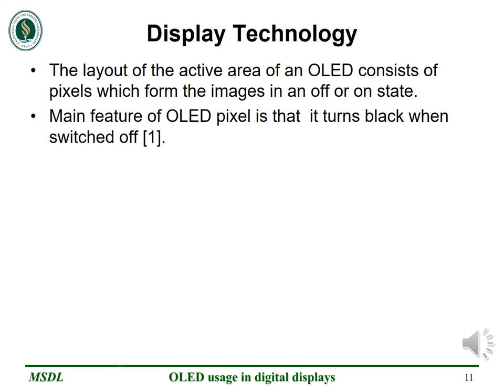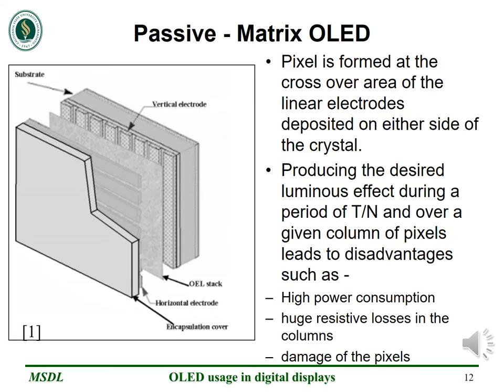Two types of display matrix technologies have been discussed: active matrix and passive matrix organic LEDs. In the passive matrix organic LED, the electrodes are oriented at 90 degrees from each other. The anodes and cathodes are perpendicular to each other and each intersection forms a pixel. A period of t divided by n is used as the addressing method for such displays, where t stands for the frame time and n for the number of lines. The disadvantages are high power consumption varying with the square of the voltage, huge resistive losses in the columns, and damage to pixels due to high current.